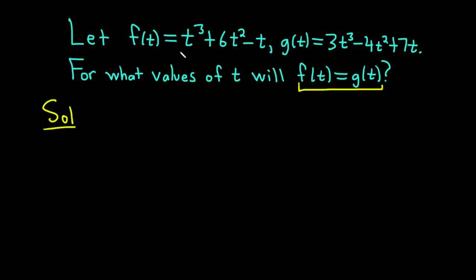So we have f of t which is t cubed plus 6t squared minus t. That's f of t and we want it to be equal to g of t which is 3t cubed minus 4t squared plus 7t.